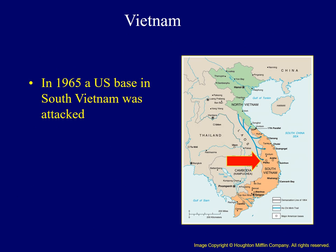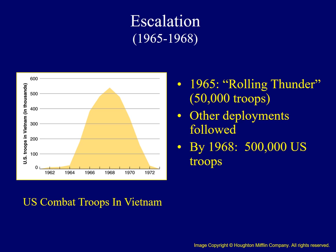With the passage of the Gulf of Tonkin Resolution in 1964, Johnson had the ability to increase U.S. troops in Vietnam. In 1965, following the attack on a U.S. base at Pleiku, Johnson used that authority. Operation Rolling Thunder was undertaken, involving about 50,000 American troops, followed by additional deployments. By 1968, about half a million forces had been sent to Vietnam. LBJ did not want to be the president who lost a war, so he sent large numbers of troops hoping it would bring an end to the conflict.